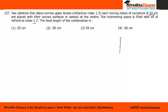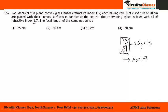We are given two plano-convex lenses and the space in between them has been filled with oil. The refractive index of the glass is 1.5 and the refractive index of the oil is 1.7. We can calculate the focal length of these three different lenses separately and then find the focal length of the combination.